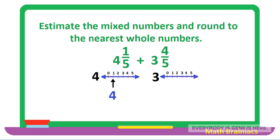The second mixed number is 3 and 4 over 5, so the arrow will point to number 4 on the number line. Since the numerator 4 is as large as the denominator 5, 4 over 5 rounds up to 1. Accordingly, 3 plus 1 gives us 4. Therefore, 4 plus 4 gives us 8 — the estimated sum of 4 and 1 over 5 plus 3 and 4 over 5 is 8.